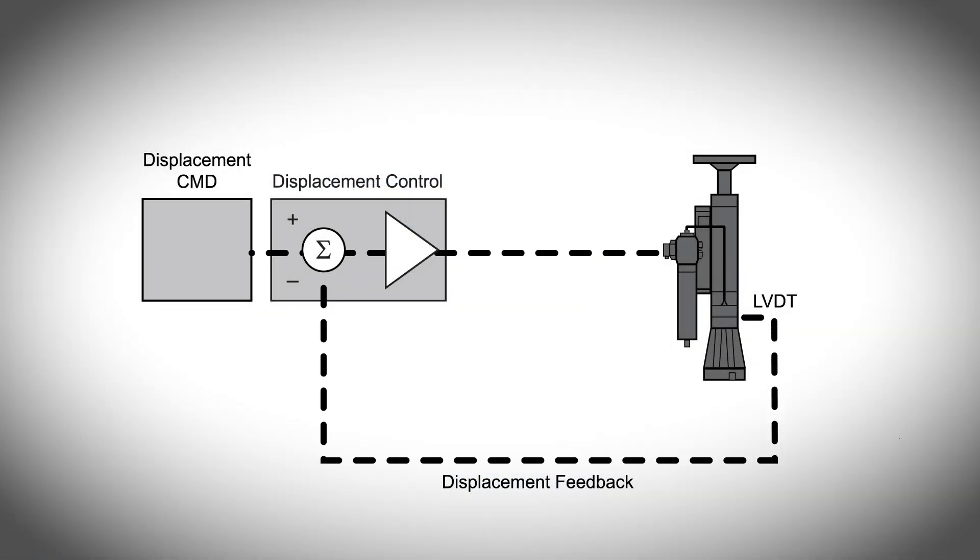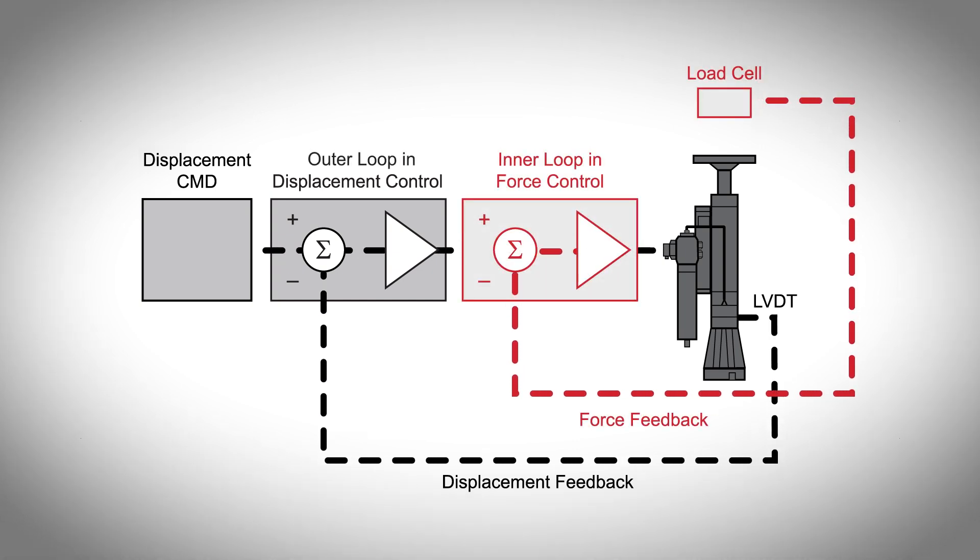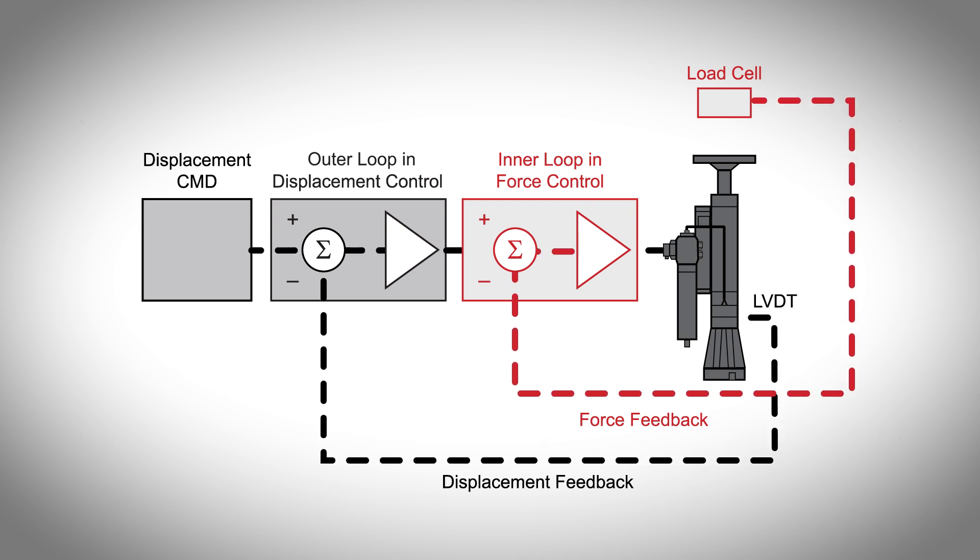Cascade control is a new method that integrates two modes of closed-loop control. While the outer control loop accepts displacement commands from the FEA model, the added inner controller provides the force control accuracy needed for conducting hybrid tests with highly stiff specimens.